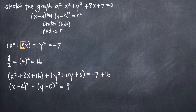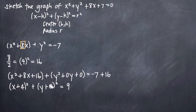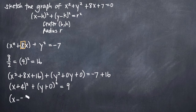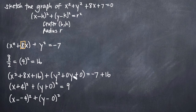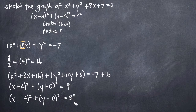Keep in mind that our standard form uses x minus h and y minus k. We have two positive signs, as opposed to the negative signs in standard form. So we can rewrite this as x minus negative 4 squared plus y minus 0 squared. On the right-hand side we have r squared, so we take the square root of 9 and write this as 3 squared. Now our equation is in the exact same form as the standard equation of a circle.